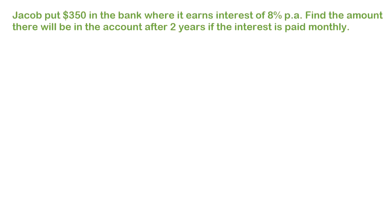Here's another one: Jacob put three hundred and fifty dollars in the bank where it earns interest of eight percent per annum. Find the amount there will be in the account after two years if the interest is paid monthly.